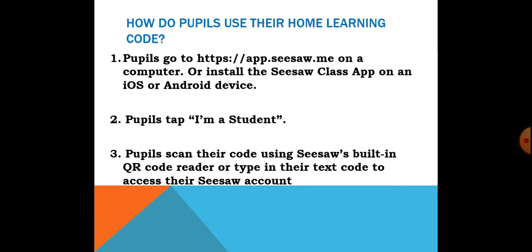How do pupils or learners use their home learning codes? The first thing after you receive your learning code is to go to app.seesaw.me on your computer through your browser — Google Chrome, Internet Explorer, or Mozilla Firefox. Type app.seesaw.me and it will redirect you to a page where you select that you are a student, and then enter the home learning code provided by your teacher.